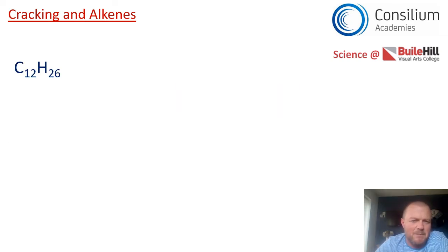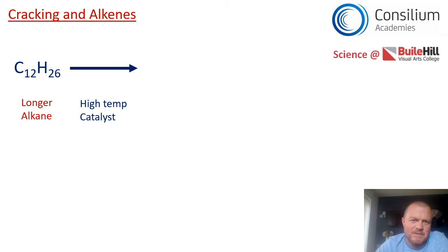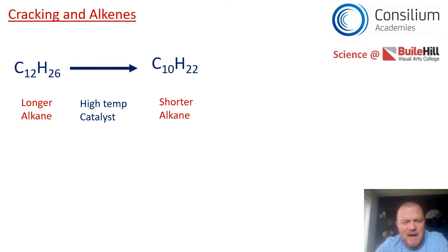Here's an exam-style example. Take the alkane C12H26 — 2 × 12 = 24, plus 2 = 26, so it is an alkane. Under high temperature in the presence of a catalyst, it will crack. You could produce C10H22, which is a shorter alkane forming part of the petrol fraction. Starting with 12 carbons and making 10 means 2 carbons are unaccounted for; starting with 26 hydrogens and ending with 22 means 4 are missing.